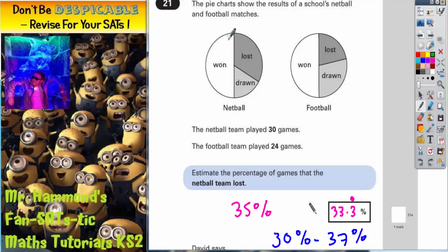the netball won is exactly a half. Football is exactly a half. So at first sight, it looks as though they've won the same amount. But actually, you've got to think about the total amount of games that they played.